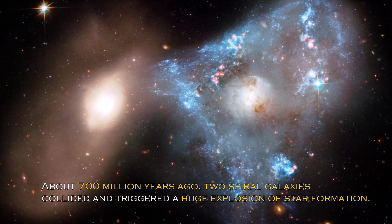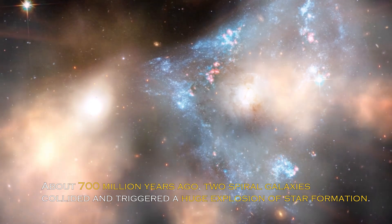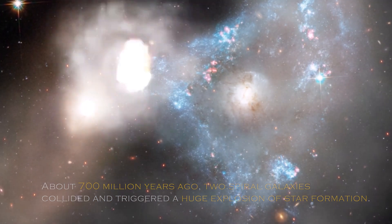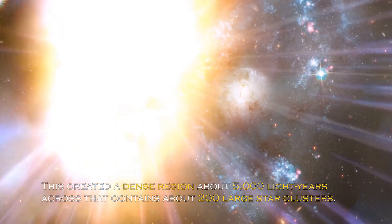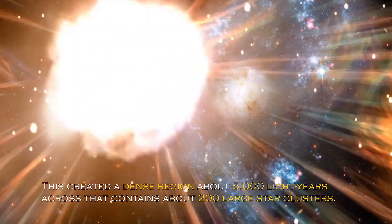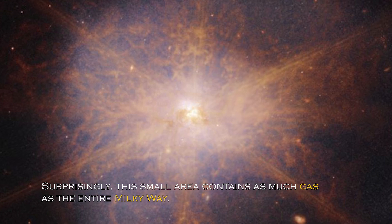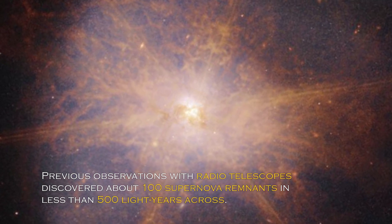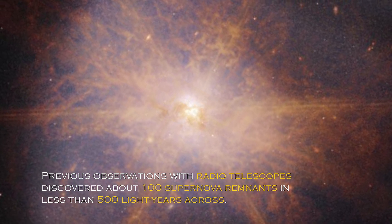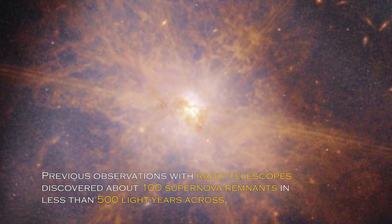About 700 million years ago, two spiral galaxies collided and triggered a huge explosion of star formation. This created a dense region about 5,000 light-years across that contains about 200 large star clusters. Surprisingly, this small area contains as much gas as the entire Milky Way. Previous observations with radio telescopes discovered about 100 supernova remnants in less than 500 light-years across.